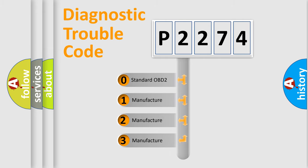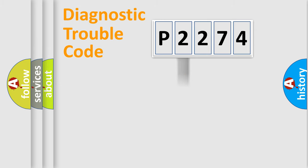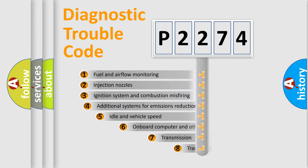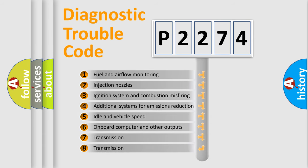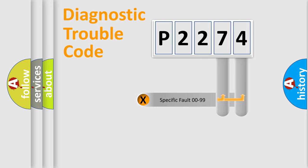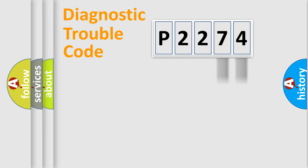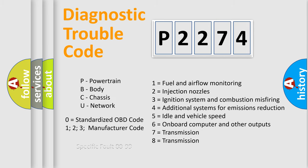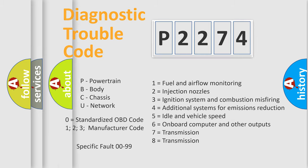If the second character is expressed as zero, it is a standardized error. In the case of numbers 1, 2, or 3, it is a more specific expression of a car-specific error. The third character specifies a subset of errors. This distribution is valid only for the standardized DTC code. Only the last two characters define the specific fault of the group — but only when the second character is zero.